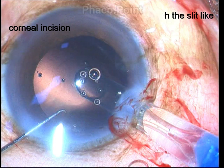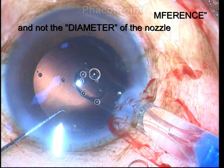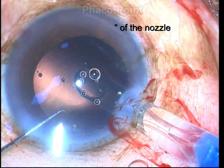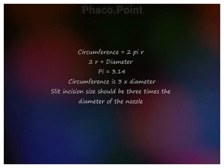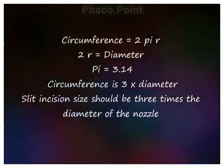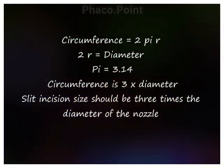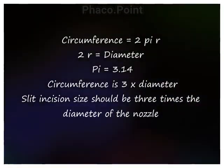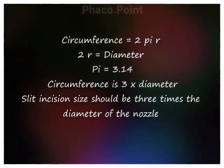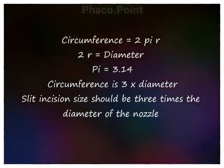For smooth, effortless and resistance-free insertion of the nozzle, its circumference and not its diameter should match the size of the clear corneal incision — this is an important concept to understand. We know that the circumference of a circle is given by the formula 2πr, where r is the radius and π has a numeric value of 3.14. Since twice the radius equals the diameter, it follows that the circumference of a circle is approximately three times its diameter.